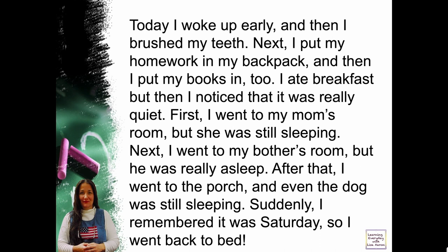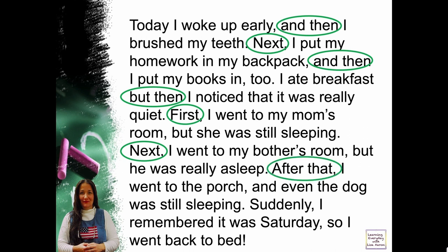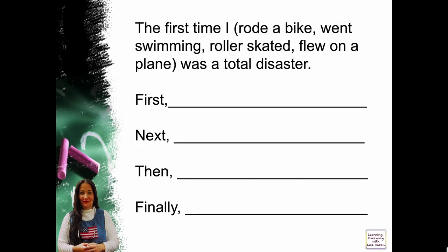Let's look for the transitions in this paragraph: 'and then,' 'next,' 'and then,' 'but then,' 'first,' 'next,' 'after that,' 'suddenly.' These are examples of transitions you could use when writing a paragraph. You can begin by using transitions in this order: first, next, then, and finally. Transitions help the paragraph flow — they help the reader follow along, connect ideas, and add chronological order.